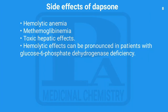The side effects of dapsone include hemolytic anemia, methemoglobinemia, and hepatotoxic effects. The hemolytic effects can be increased in patients with glucose-6-phosphate dehydrogenase deficiency. That is all about dapsone.